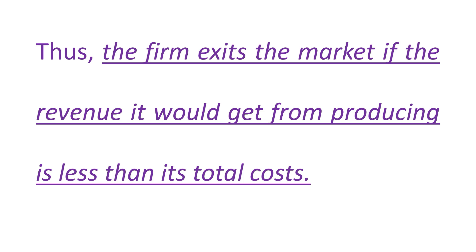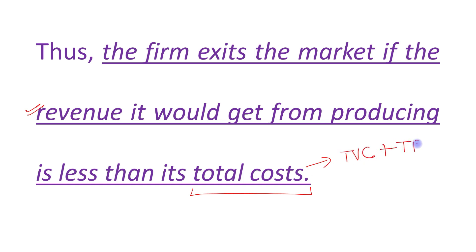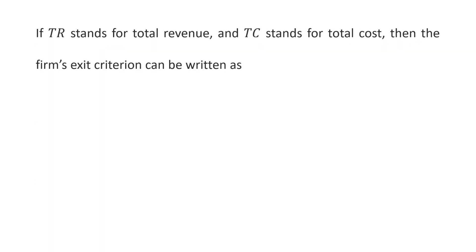A firm should exit the market if its revenue is less than its total cost. Total cost includes both total variable cost and total fixed cost. If TR stands for total revenue and TC stands for total cost, then the firm's exit criteria can be written as: exit if total revenue is less than total cost.